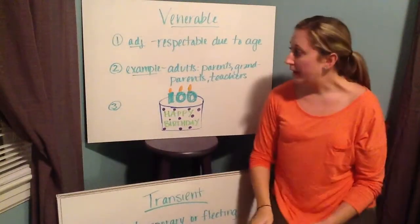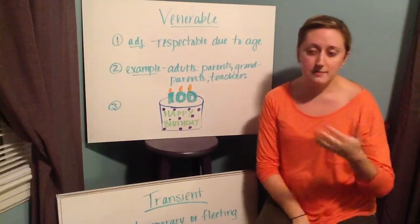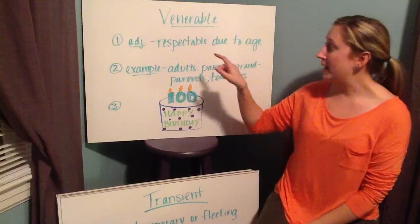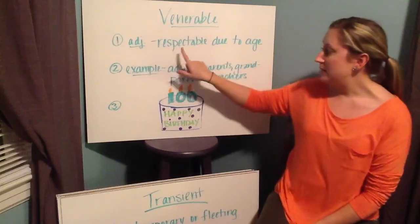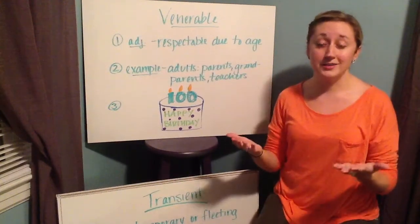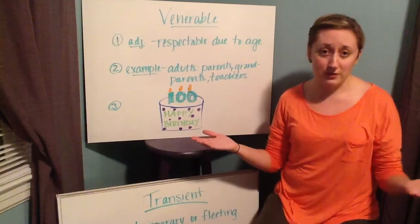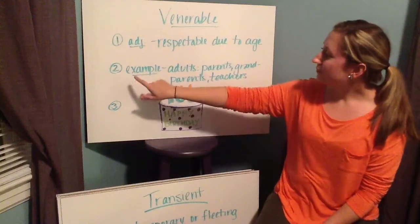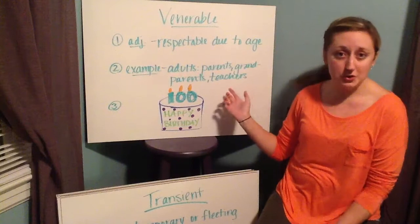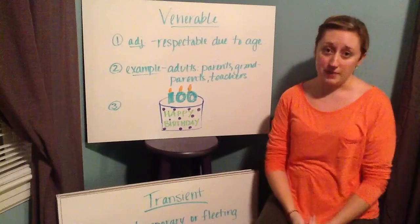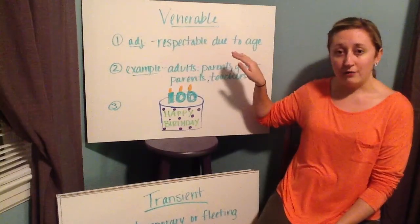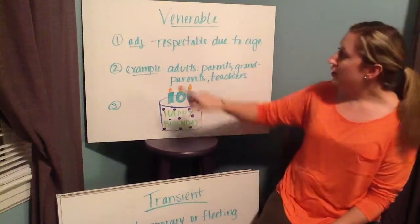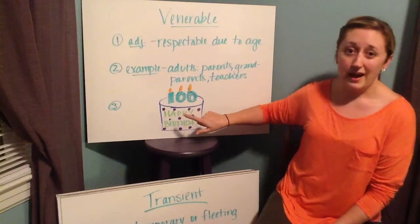Your next word is venerable. In previous weeks we had the word reverence, which meant profound respect — and in some instances that could be because of someone's older age. Venerable is an adjective that means respectable due to age. People who are older have seen more and done more, and in turn they have more sagacity — more wisdom. Examples are adults, parents, grandparents, and teachers — people who have been through something you haven't been through yet, and you give them respect because they have gone through more than you have. The picture I drew is a happy birthday cake for someone's 100th birthday — venerable, respectable due to age.